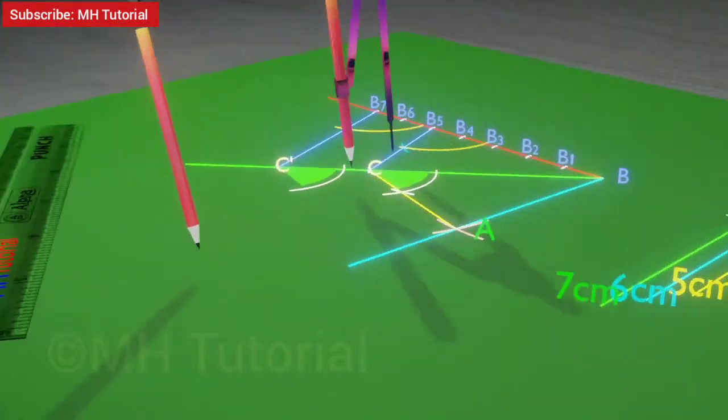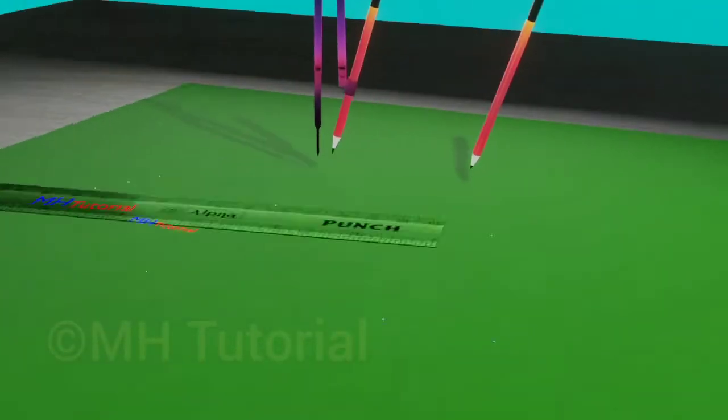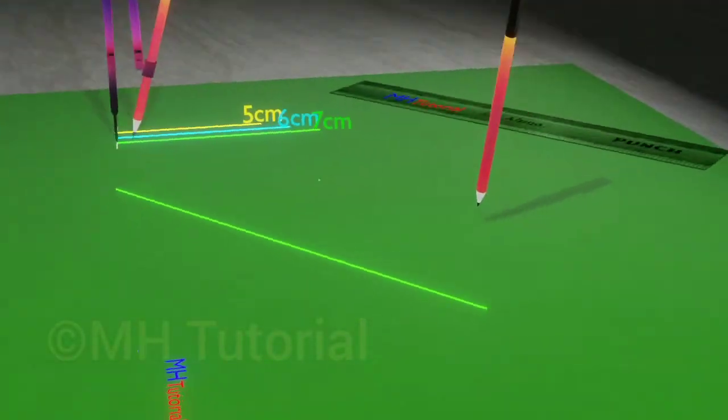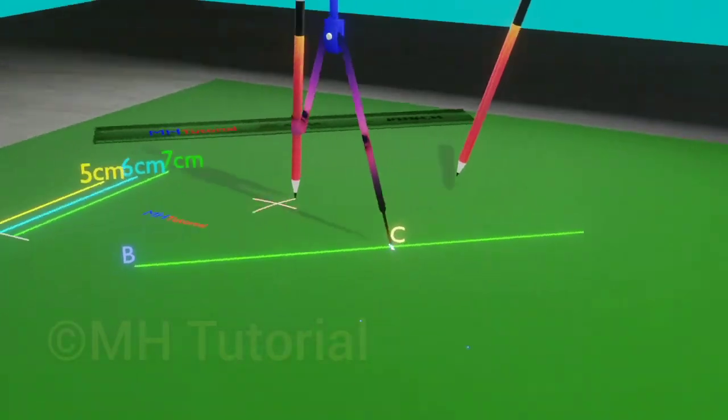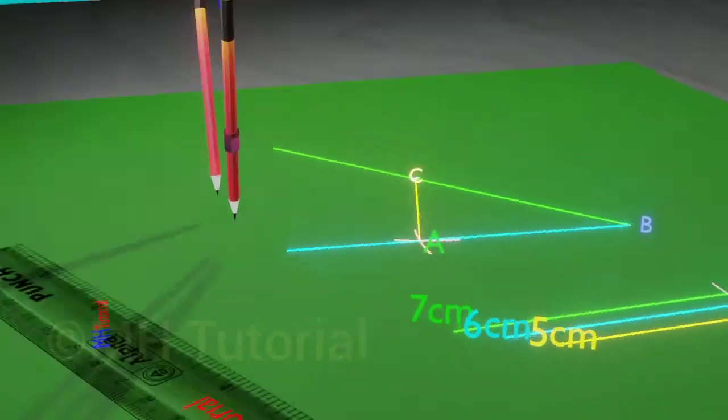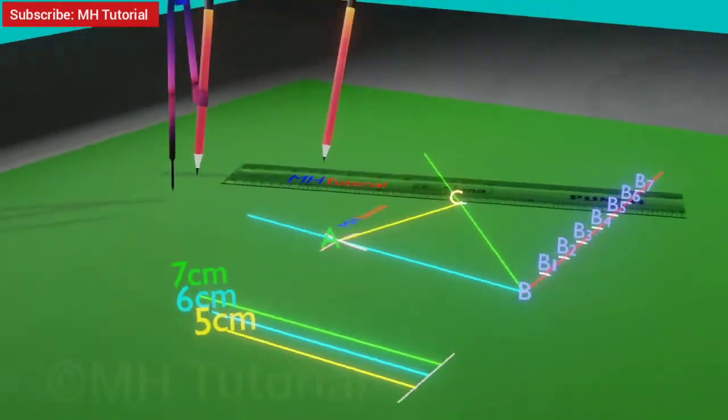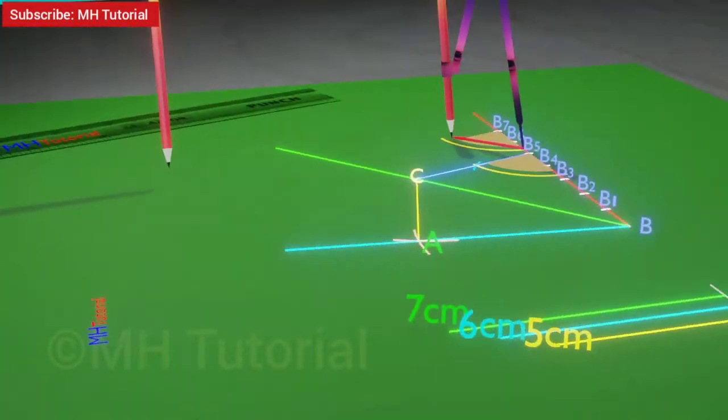Board exams award 5 or 6 marks for this drawing and it is very easy, simple and interesting. This drawing or construction should be practiced regularly to get the guaranteed marks of 5 or 6. Watch the video till the end because at the end of the video the relative size of those two triangles is shown.